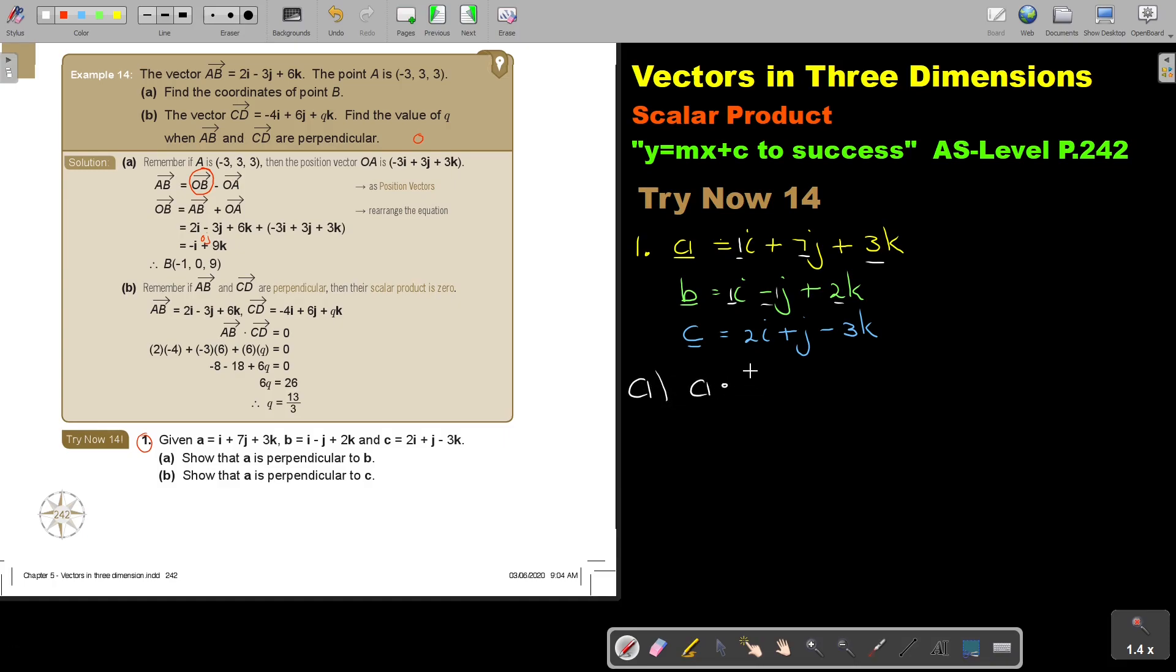Let's find the scalar product of AB, and that is going to be 1, and there is also a 1, and there is a 7, and there is a negative 1, and there is a 3, and there is a 2, 3, 2. And that will be 1, minus 7, plus 6. So, I get that the scalar product is 0.